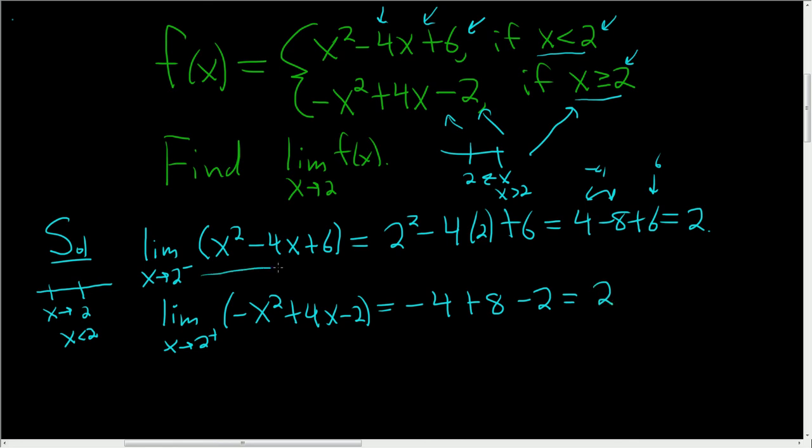So the limit from the left is equal to 2, the limit from the right is equal to 2. Therefore, the limit as x approaches 2 from any direction is also equal to 2. Now, if we had gotten different answers here, then the limit would not exist.